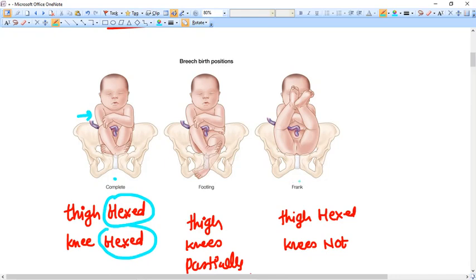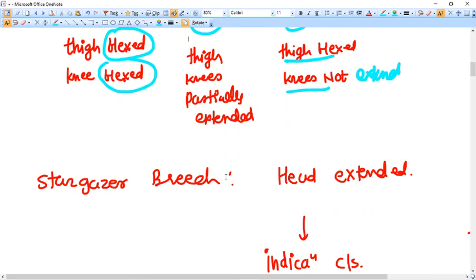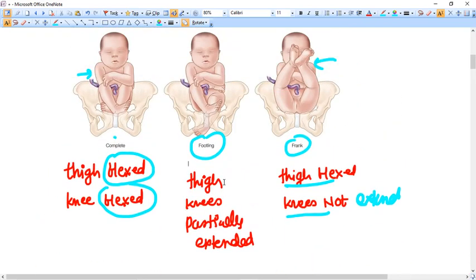Another is frank breech. In frank breech, thighs are flexed but knees are not. Knees are extended like this. And in footling breech the thighs and knees are partially flexed. That is why the legs reaches the part earlier in the lower pole. That is footling presentation. These three basic kinds of presentations are there.